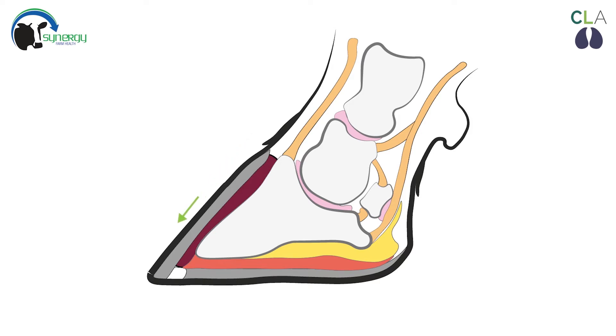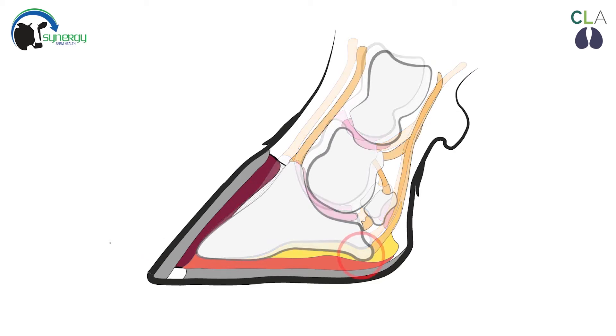At and around calving, ligaments slacken in the foot and can result in the pedal or toe bone sinking and pinching the quick or corium.